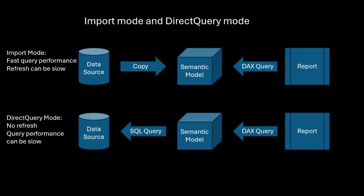When your Power BI report ran, it ran a DAX query against the semantic model. The semantic model translated that DAX query into one or more SQL queries, got the data from the relational database, brought it back to the semantic model, stitched it together, did all the calculations, and then gave it back to the report. Which meant there was no refresh and you weren't limited by how much data you could load, but performance was usually a problem. We've got things like composite models where you can mix and match import mode and direct query mode, and aggregations which can help as well. But those are the two fundamental storage modes: import mode and direct query mode.